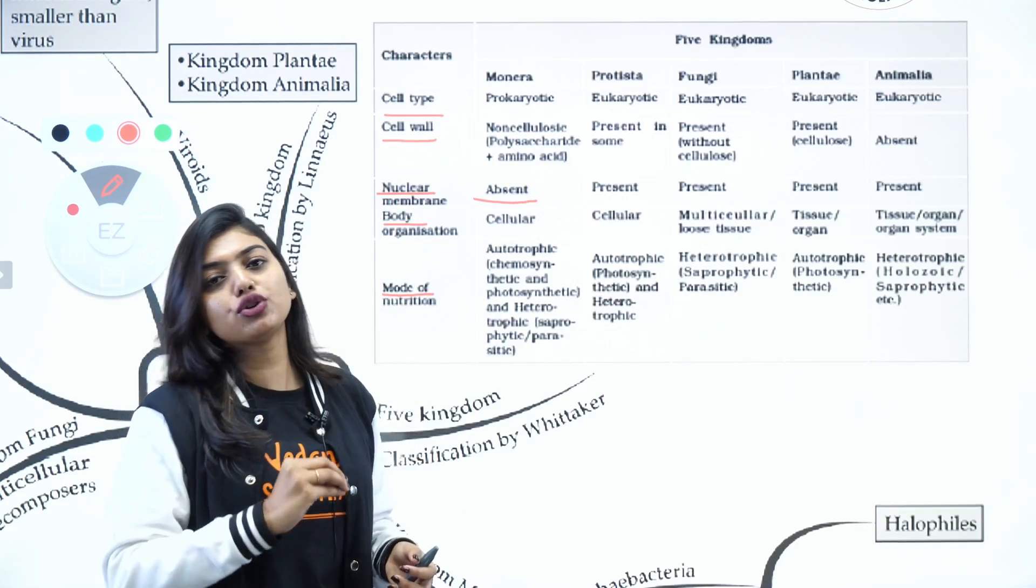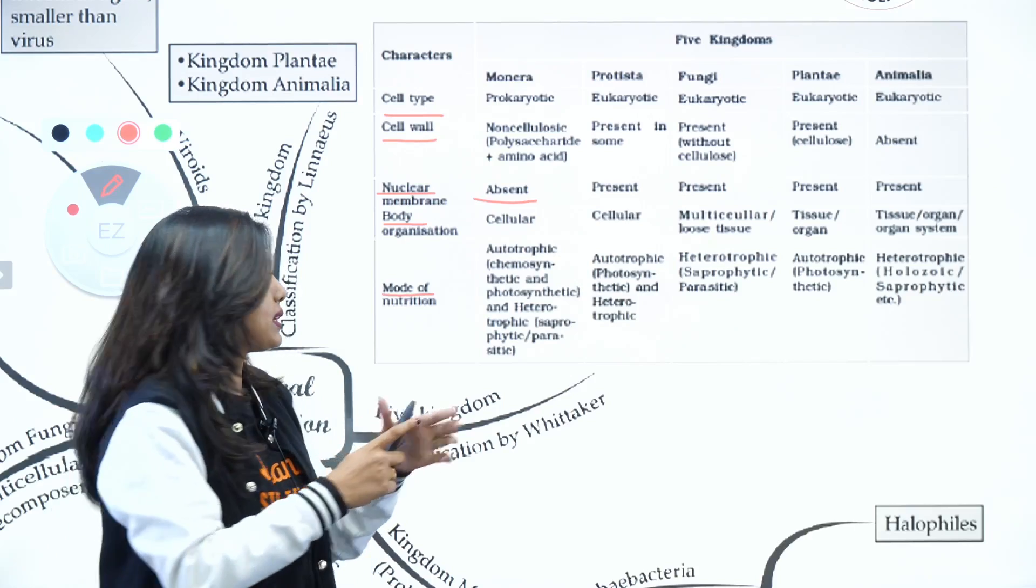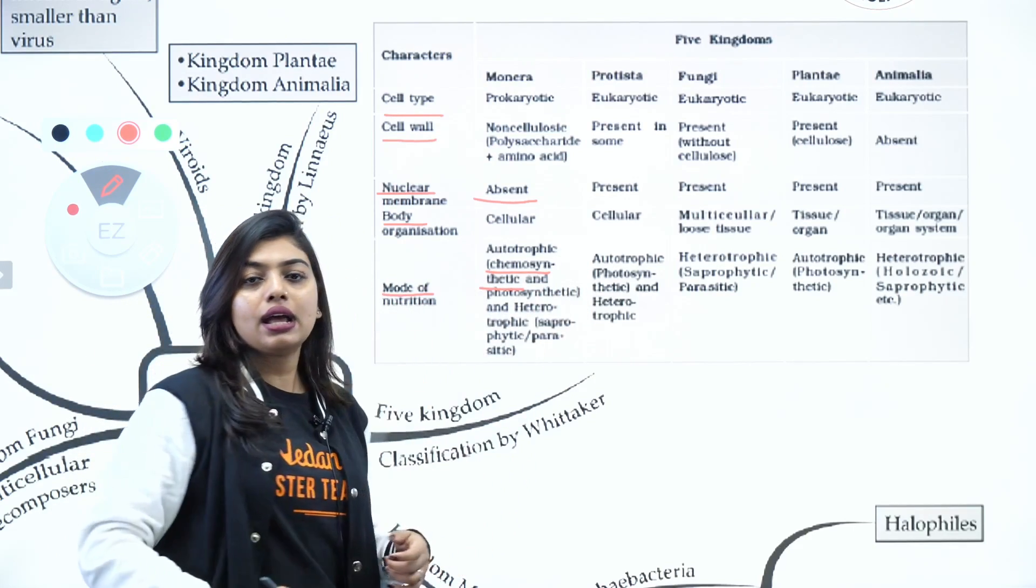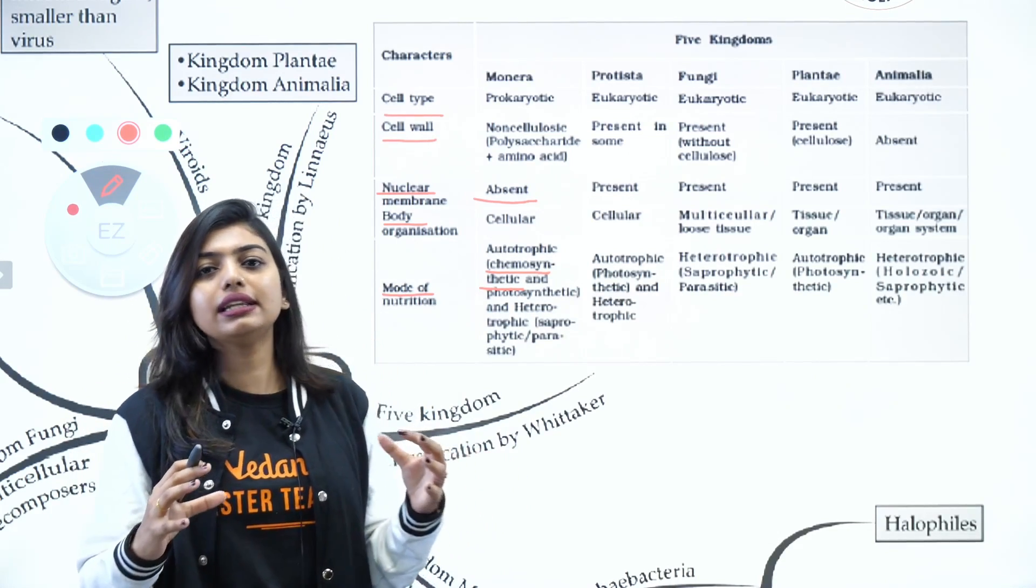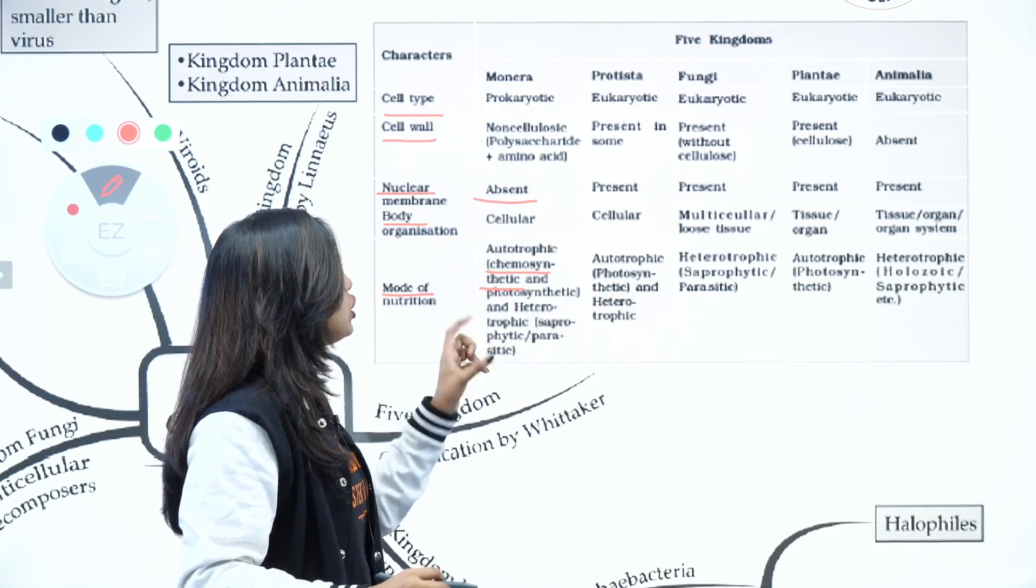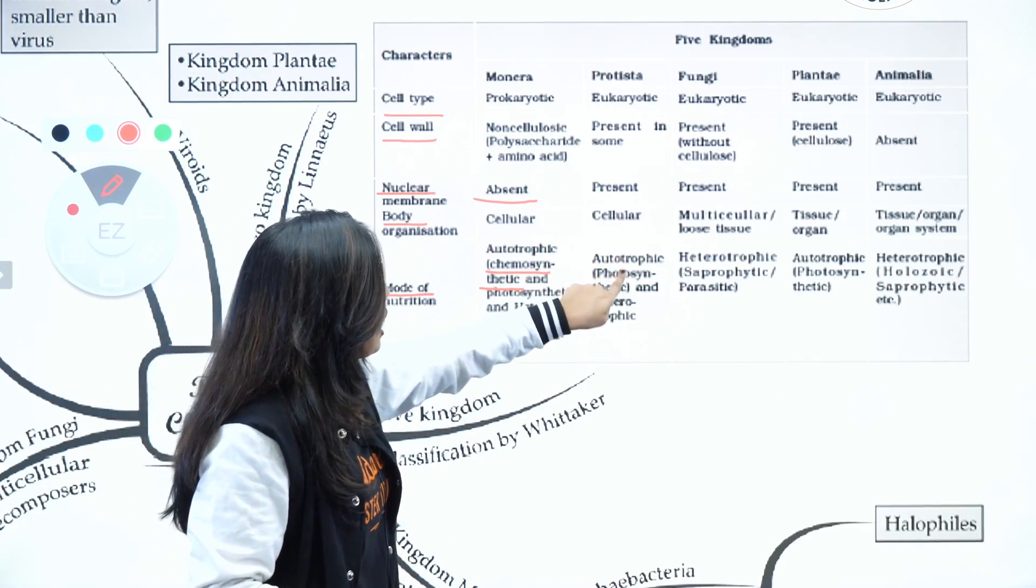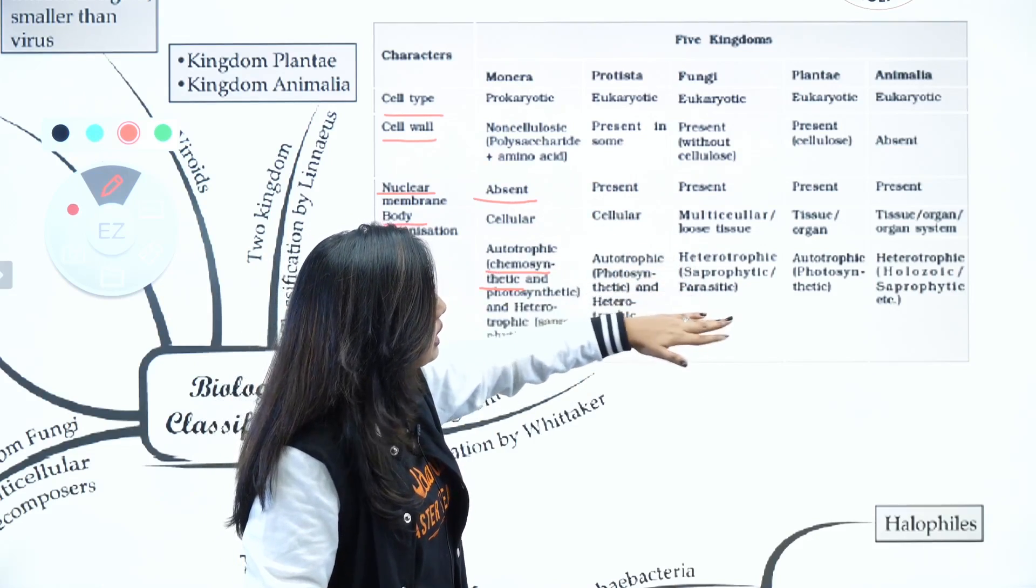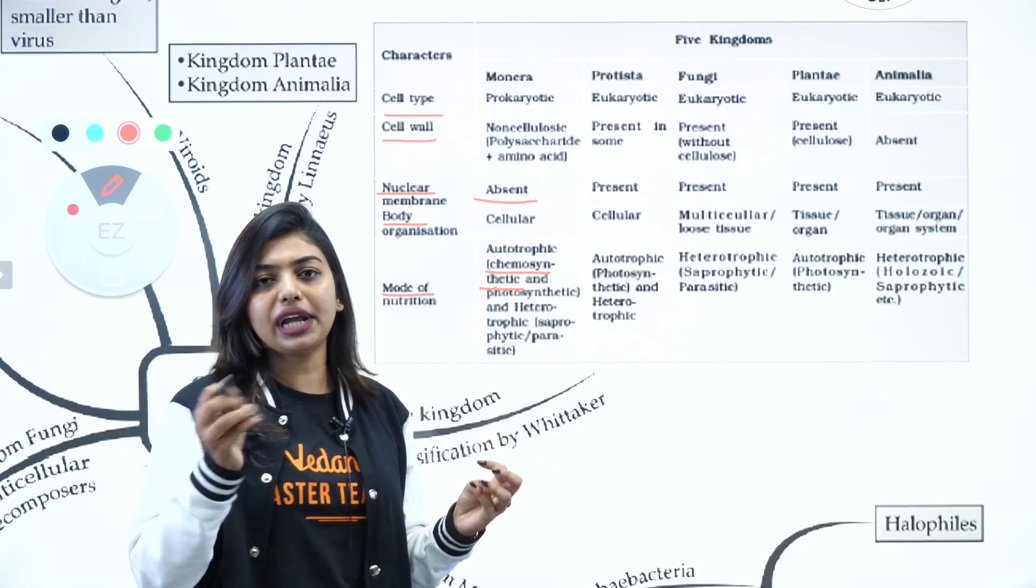Then we have mode of nutrition. Mode of nutrition in Kingdom Monera is all the types - autotrophic, chemo-autotrophic. Very important thing is they can do chemosynthetic - that is using inorganic chemicals they can yield energy, and this is only seen in Kingdom Monera. We have autotrophs, heterotrophs, and under autotrophs we have chemosynthetic and photosynthetic autotrophs. Under Protista we have autotrophic and heterotrophic. Fungi - heterotrophic, saprophytic and parasitic. Plantae - autotrophic, and Animal - holozoic or heterotrophic.